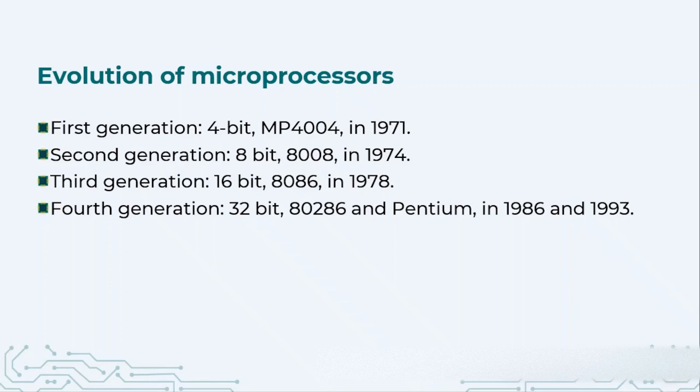In 2010, Intel launched the 5th generation which is 64-bit microprocessors in the form of i3, i5, and i7 series. These are the modern, state-of-the-art and very high-performing microprocessors.